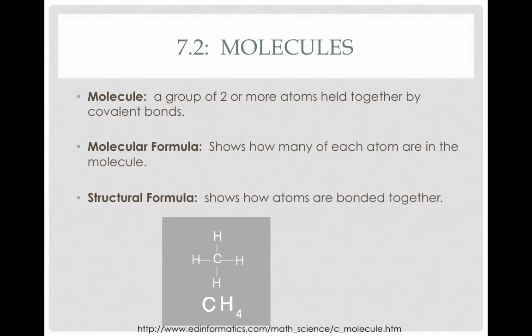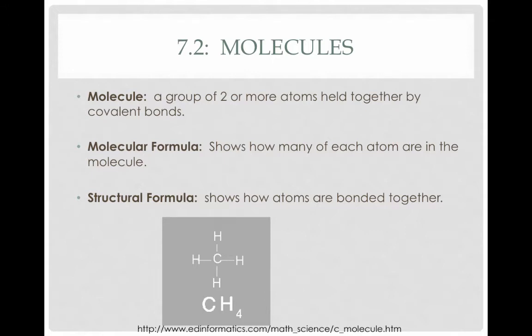We can also draw a structural formula, which is what we're going to be doing largely in this video. This shows how the atoms are bonded together. Above CH₄, you can see the structural formula showing the bonds as lines. Another example is C₂H₆: the molecular formula tells us there are two carbons and six hydrogen atoms in each C₂H₆ molecule, and above that we see the structural formula showing how this molecule is put together.